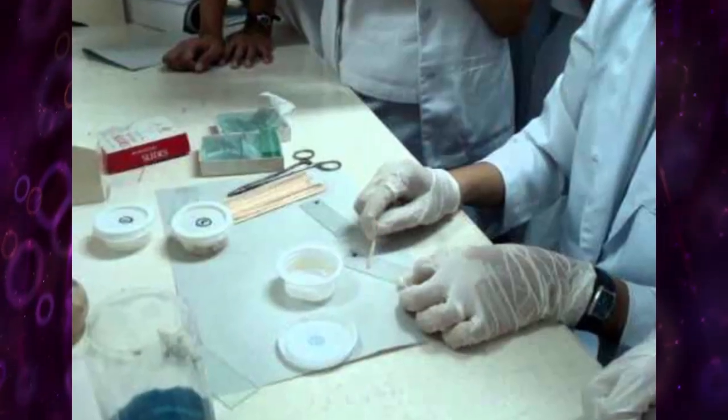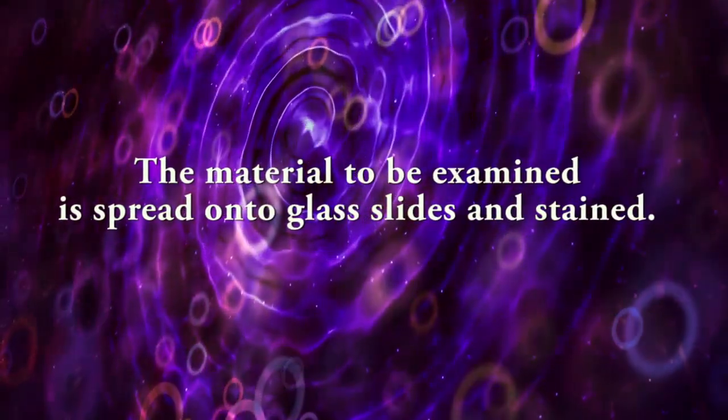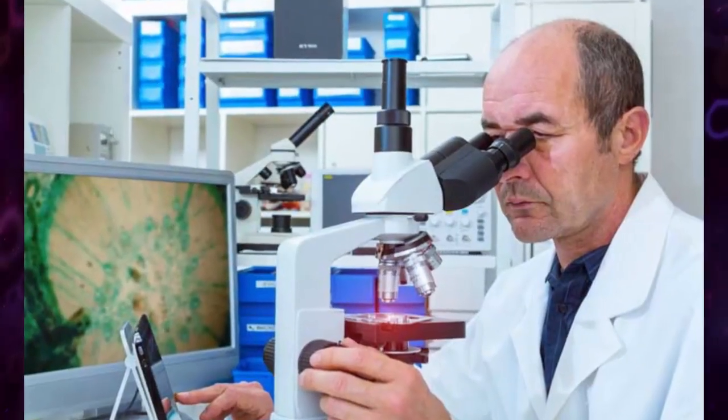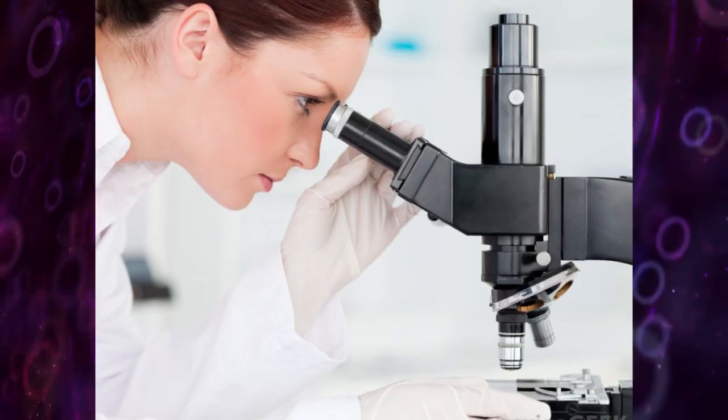For cytologic evaluation to be carried out, the material to be examined is spread on two glass slides and stained. A pathologist then uses a microscope to examine the individual cells in the sample.